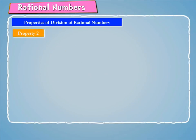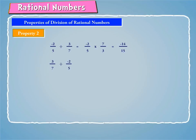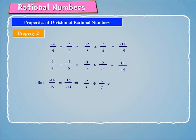Property 2: Let us consider the following example. Minus 2 by 5 divided by 3 by 7 is equal to minus 2 by 5 into 7 by 3, which equals minus 14 by 15. And 3 by 7 divided by minus 2 by 5 is equal to 3 by 7 into 5 by minus 2, which equals 15 by minus 14. But minus 14 by 15 is not equal to 15 by minus 14. So, minus 2 by 5 divided by 3 by 7 is not equal to 3 by 7 divided by minus 2 by 5.